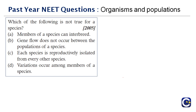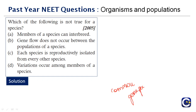Next question: which of the following is not true for a species? Gene flow does not occur between populations of a species — this is the incorrect statement. Gene flow is the spread of genes through a population, ensuring all populations of a given species share a common gene pool. Interruption of gene flow between populations is a prerequisite for formation of new species. Therefore option B is the right answer.